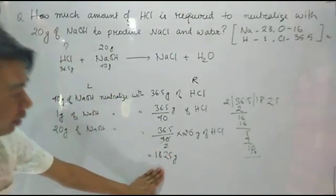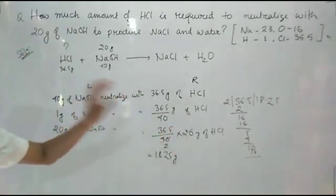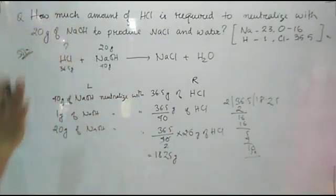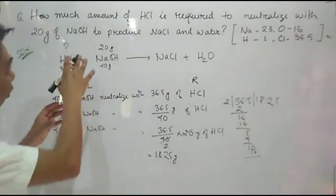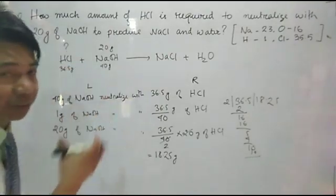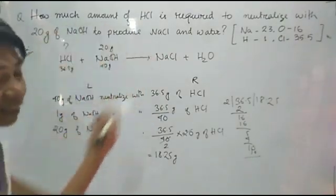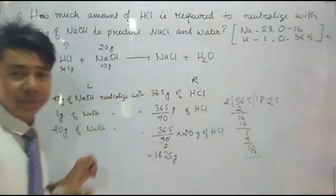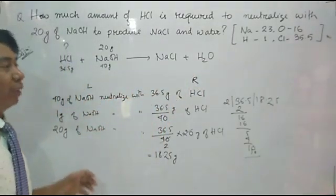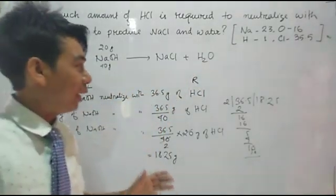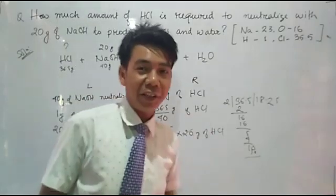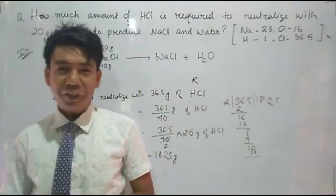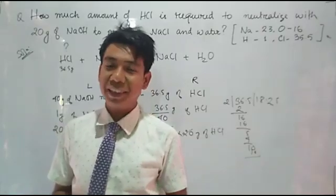18.25 grams of HCl is required to completely neutralize 20 grams of sodium hydroxide. If the question is changed — asking about sodium hydroxide instead of HCl — then you need to swap the left and right sides accordingly. In this way, you can easily calculate the neutralization reaction. Thank you very much for watching this video till the end.